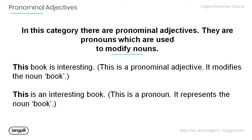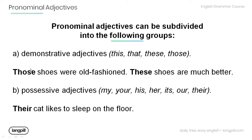Within this category, there are pronominal adjectives. These adjectives are pronouns used to modify nouns. For example: 'This book is interesting' — here 'this' is a pronominal adjective modifying the noun 'book.' Compare that to 'This is an interesting book,' where 'this' functions as a pronoun representing the noun 'book.'